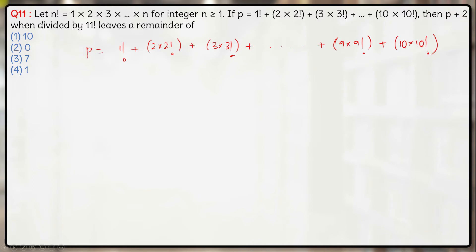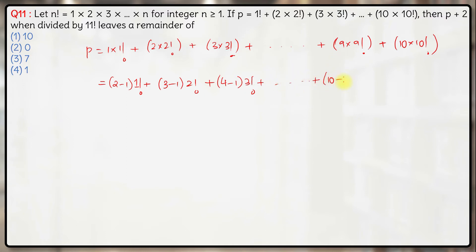Let us simplify p first. Each term k·k! can be rewritten: 1 can be written as (2−1)·1!, 2 as (3−1)·2!, 3 as (4−1)·3!, and so on till 9 as (10−1)·9!, and 10 as (11−1)·10!.